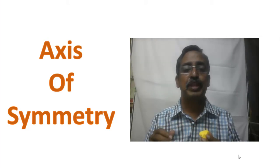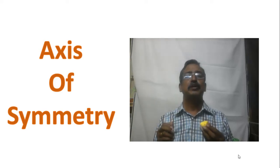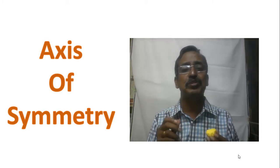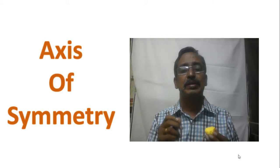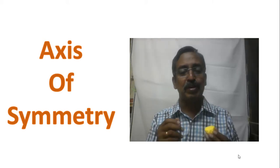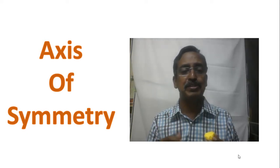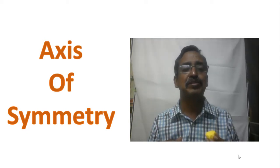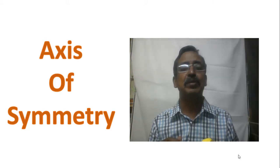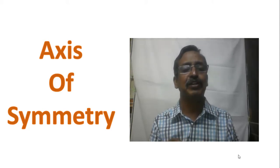The axis of symmetry is an imaginary line about which a molecule is rotated in such a way that when the molecule is rotated through 360 degrees, the equivalent appearance is repeated n times. If the equivalent appearance is repeated n times, we call the axis Cn. If it is repeated two times we call it C2, and if repeated three times we call it C3, and so on.